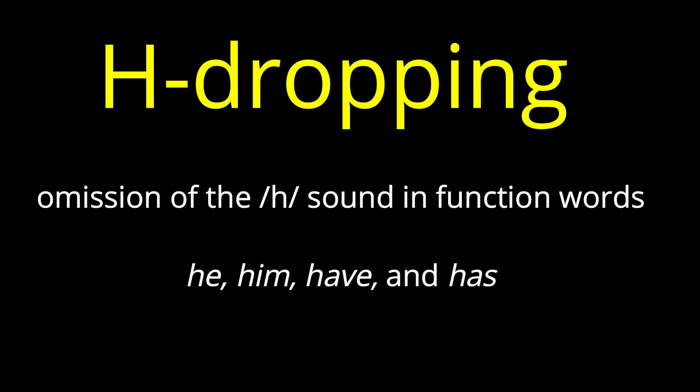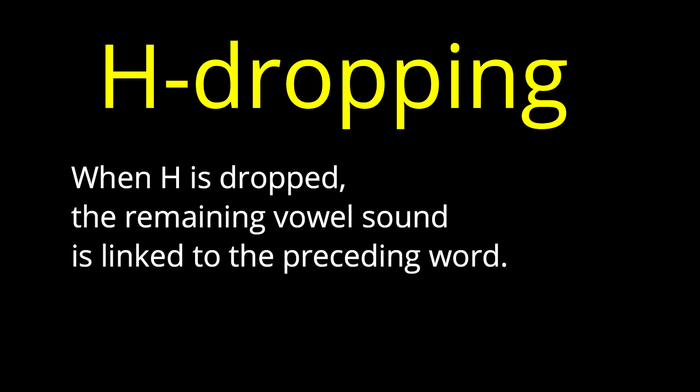H-dropping refers to the omission of the H sound in function words that begin with H, like he, him, have, and has, if the H word does not begin a sentence. When H is dropped, the remaining vowel sound is linked to the preceding word. We learned this in the section on catenation.